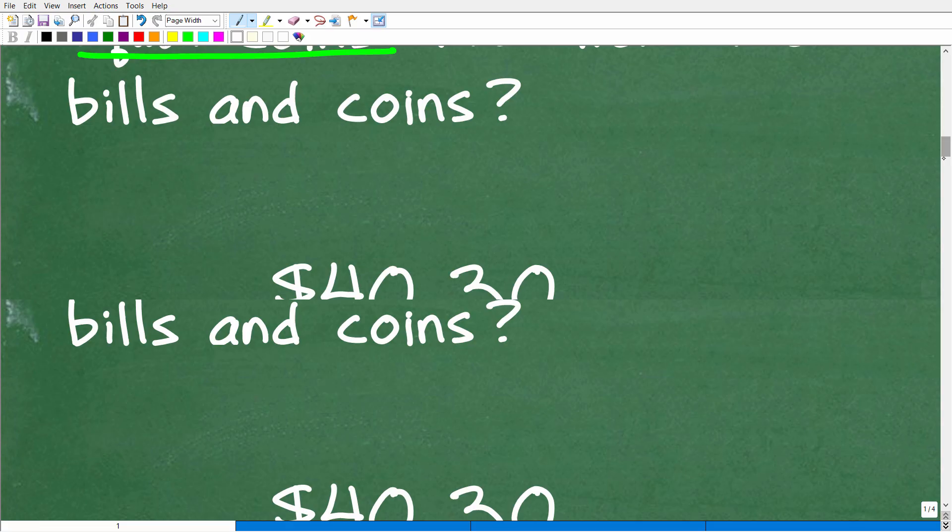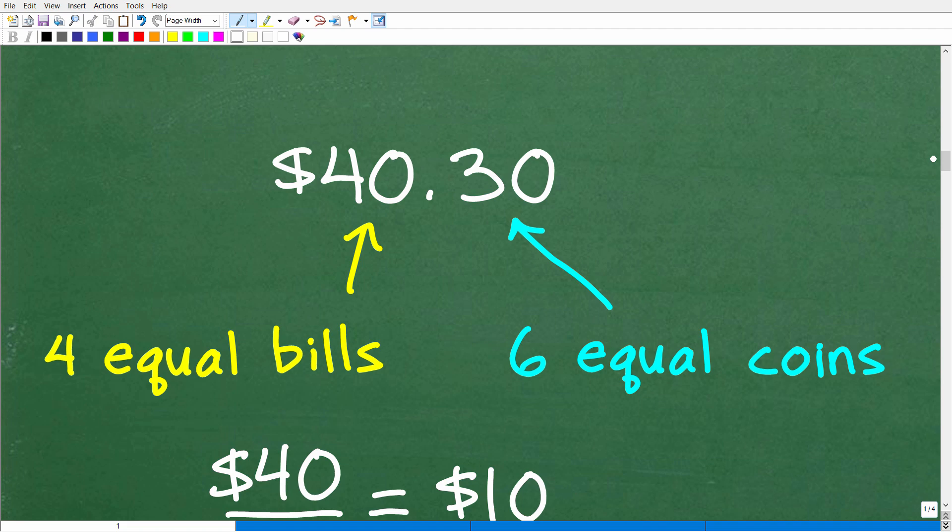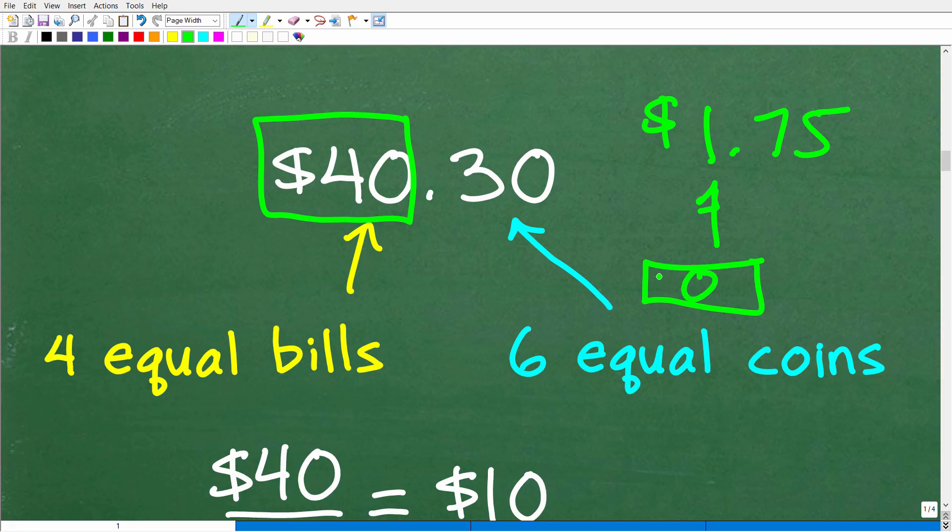So here is the problem again. Now that we're clear about the question and what bills are and what coins are, what we need to do is just reason through how can we figure this out. Well, this $40 and 30 cents, we need to break it up into bills and coins apart. So $40, this part right here, this is how much he's going to pay with the bills. Now anything under $1 is going to be after the decimal point. So we use coins to pay for values under a dollar.